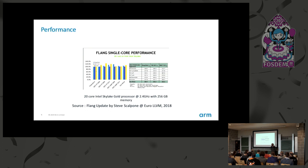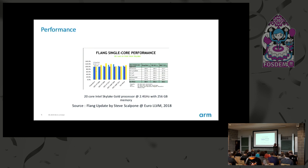Another question: given that HPC code often mixes Fortran, C, and C++, what is the state of cross-language LTO between Fortran and C/C++ with new Flang? The speaker notes that once you generate LLVM IR or object code, language-specific differences are largely gone, and LTO has been seen working with mixed Fortran applications, so it should work fine.